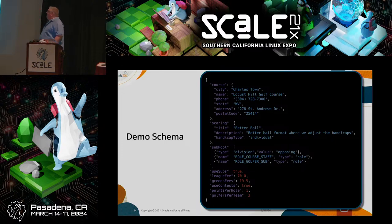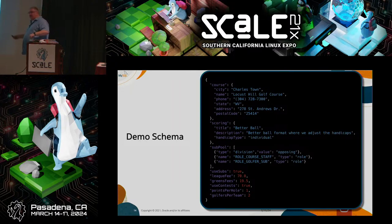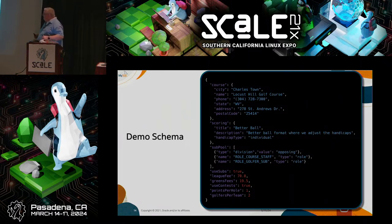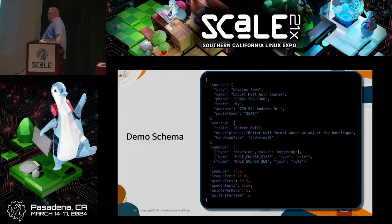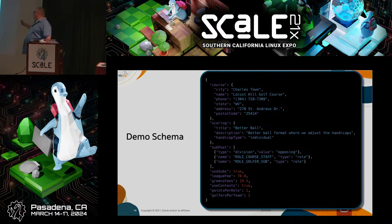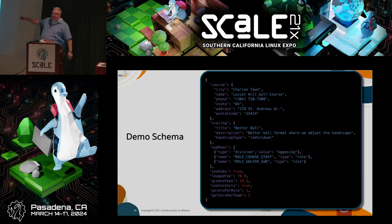This is the schema I have. There's a course property which is an object with information about the golf course, a scoring property with information about the type of scoring used, and a subpool property which is an array of different user role types that can play as substitutes in the league. We also have use_subs, league fee, greens fee, whether we use contests, points per hole, golfers per team, and more.